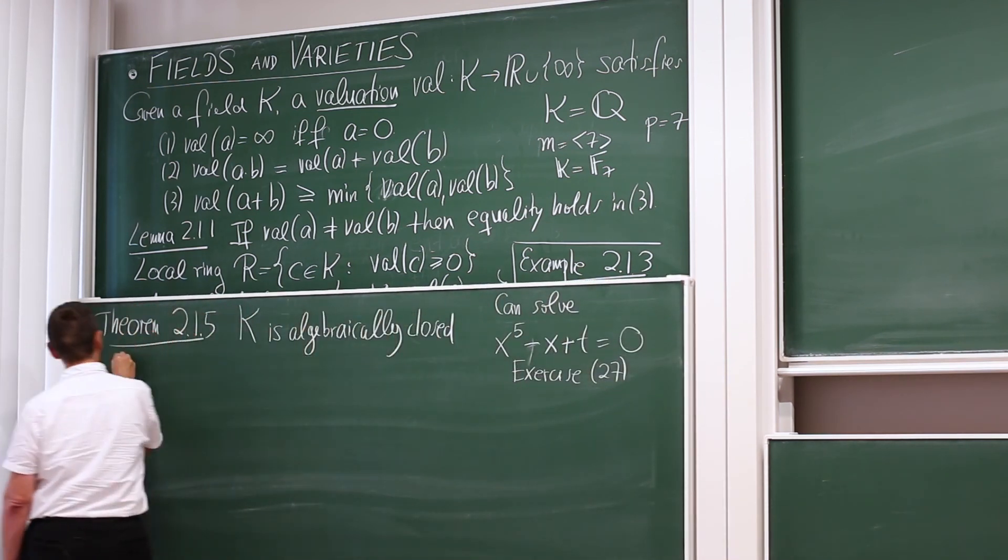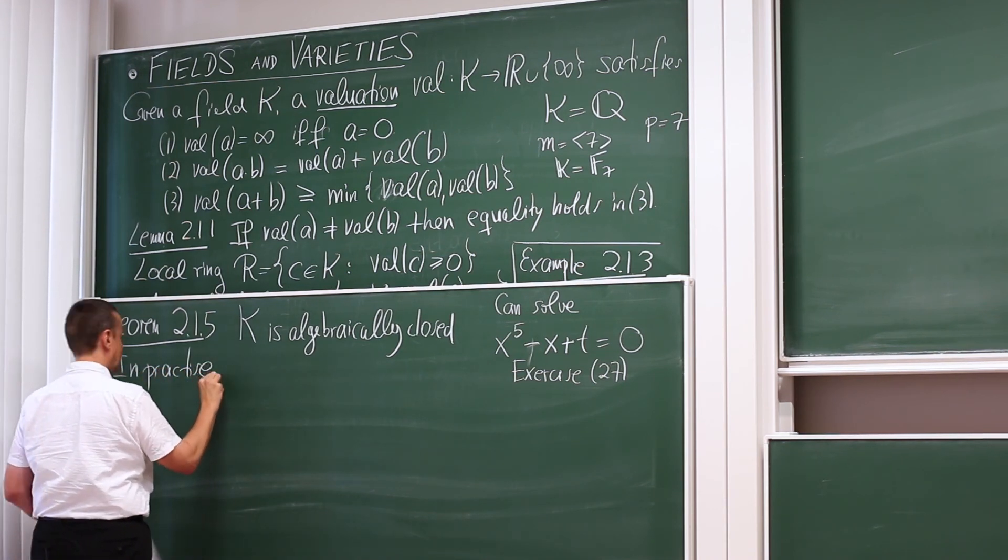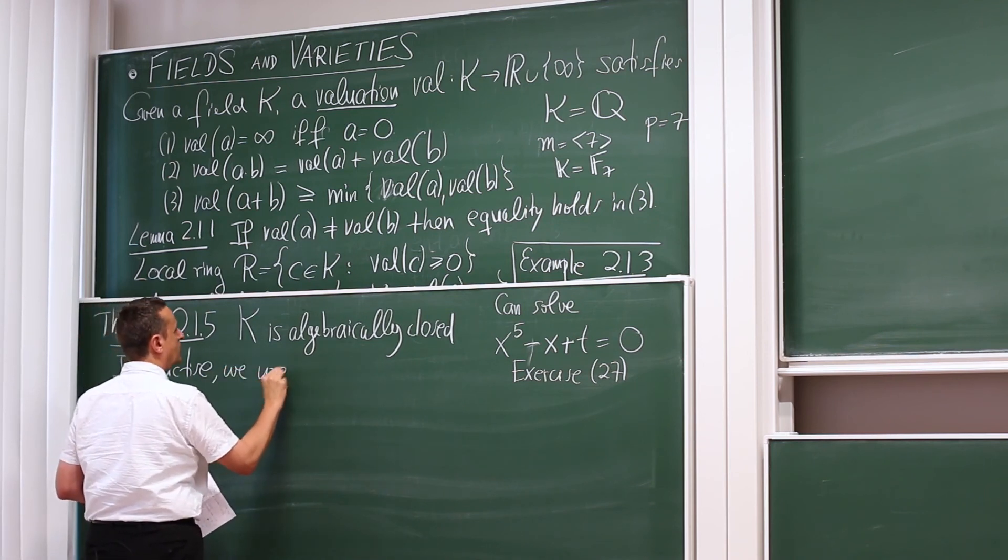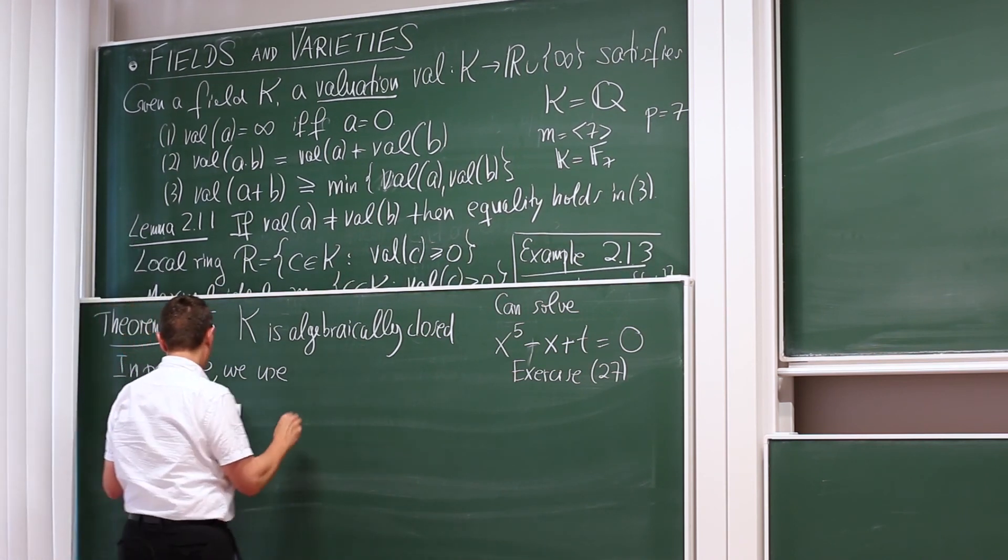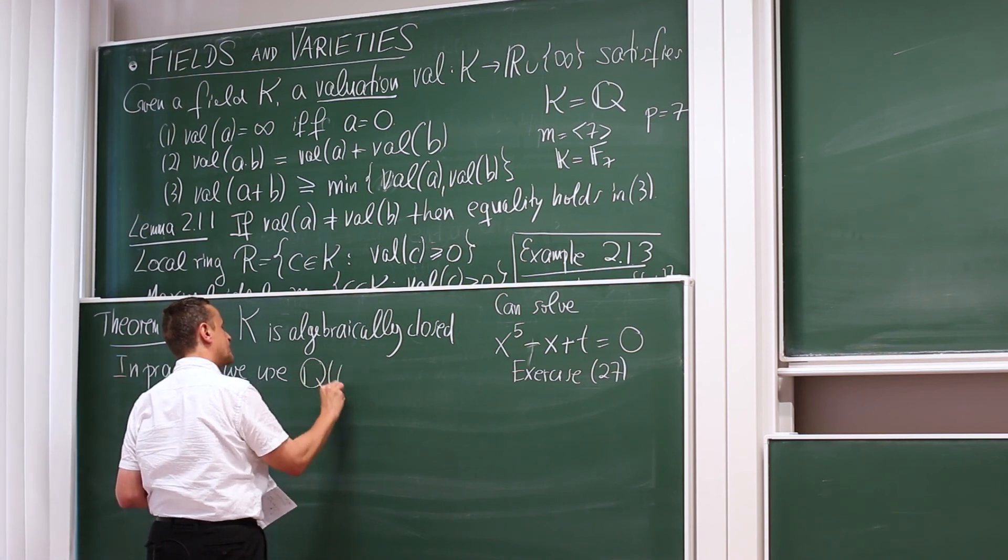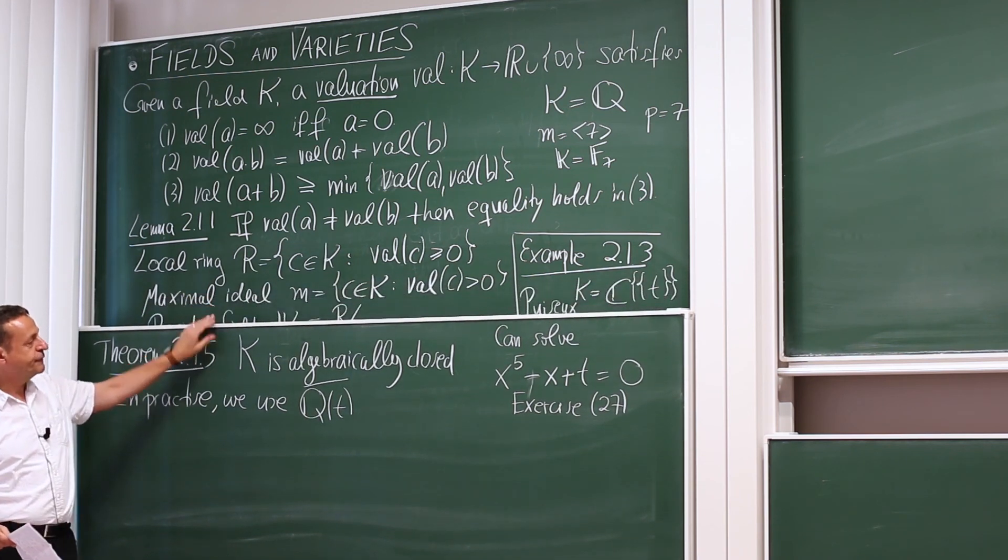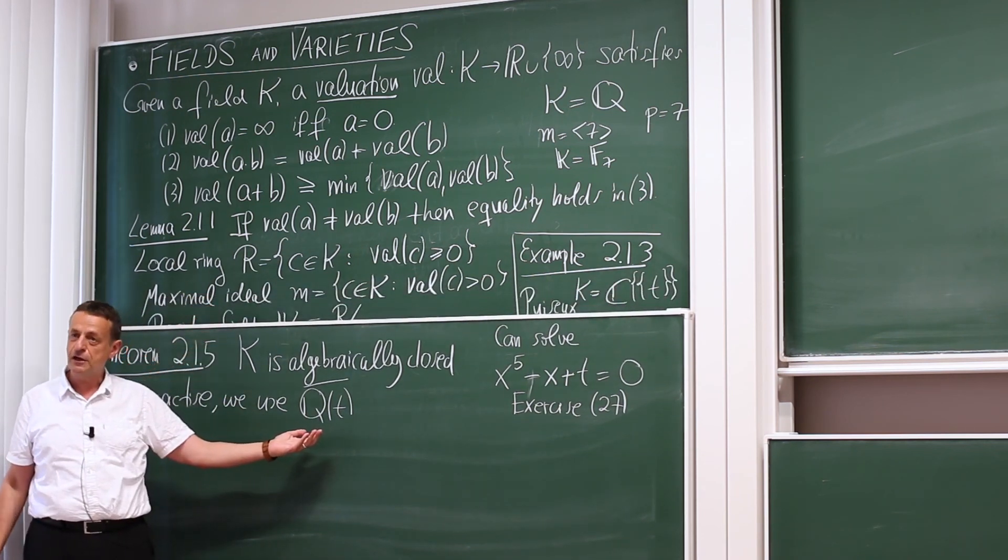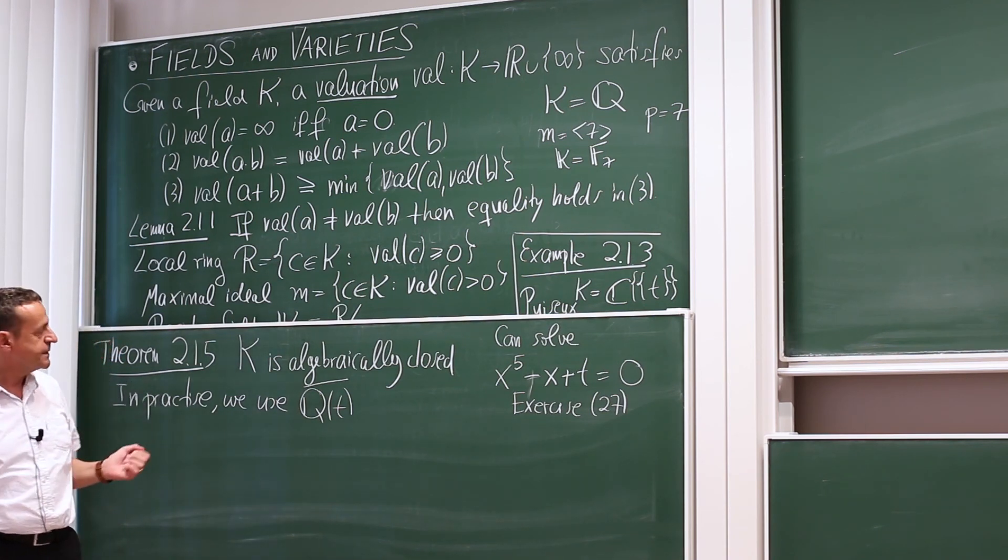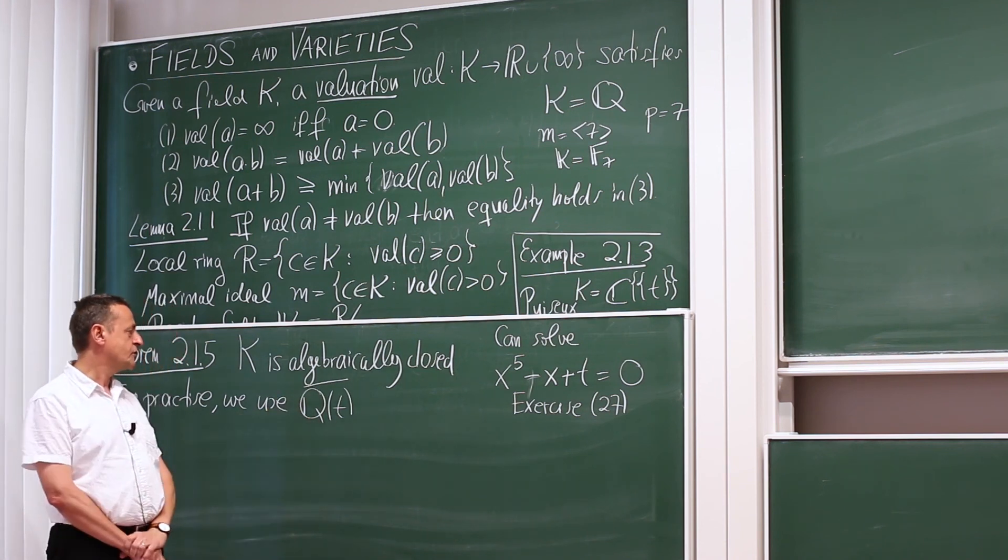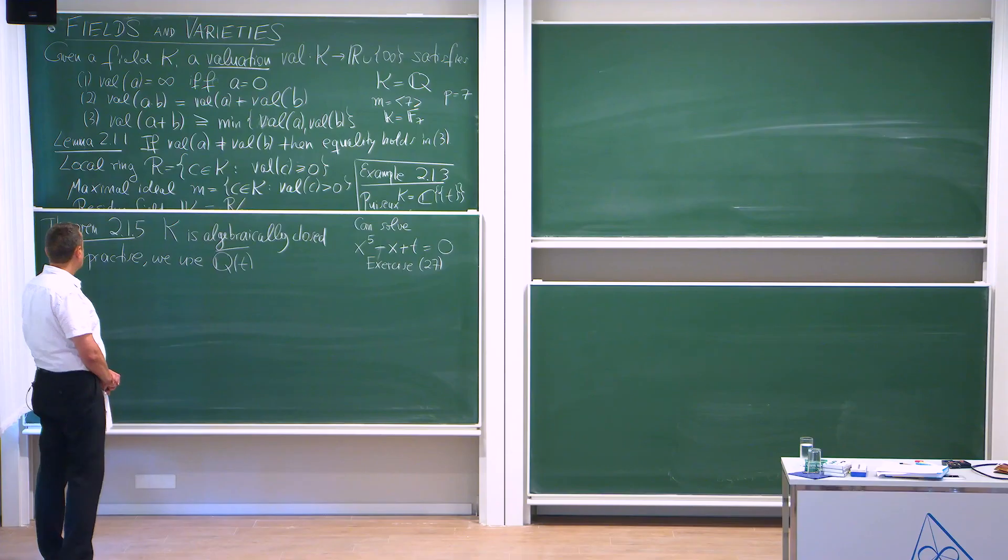So in practice, the fields that we like to use in practice are subfields. So inside the Puiseux series, there is an algebraically closed subfield, namely, the rational functions in t, algebraically closed. So this is a subfield. Why is that a subfield? Well, because every rational function in t has a power series expansion, can be written as a power series in t. So every rational function is a power series, and the same holds for the algebraic closure. So this is a subfield.